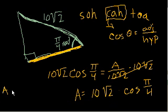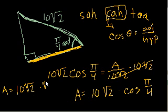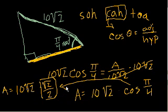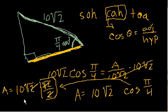So a, the adjacent side, is equal to 10√2 times √2/2. This isn't something people memorize — you'd look it up or use a calculator. Multiplying: √2 times √2 is 2, and that cancels with the denominator 2. Everything cancels except for the 10. So the adjacent side is equal to 10.